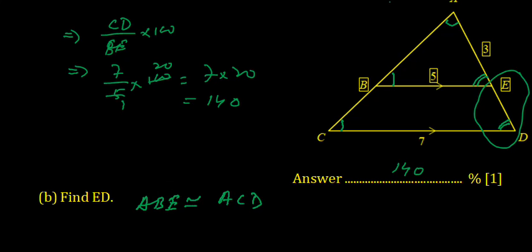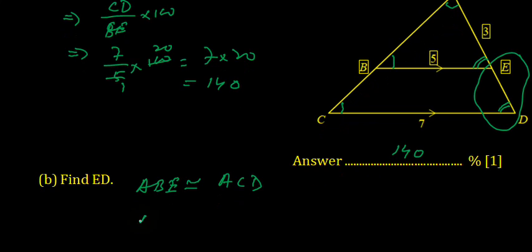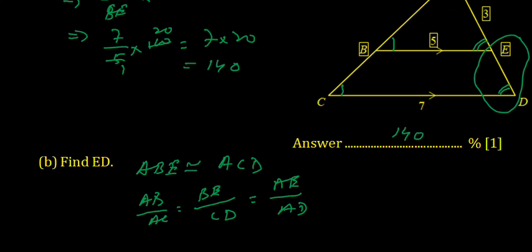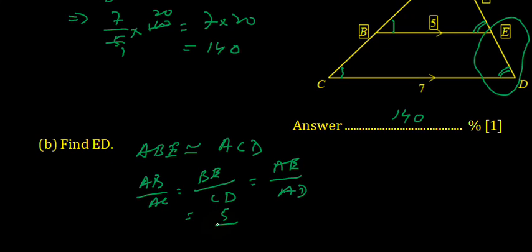We can use the property of similar triangles: AB upon AC equals BE upon CD and AE upon AD. Now we insert the values. BE is 5, CD is 7, and AE is 3.